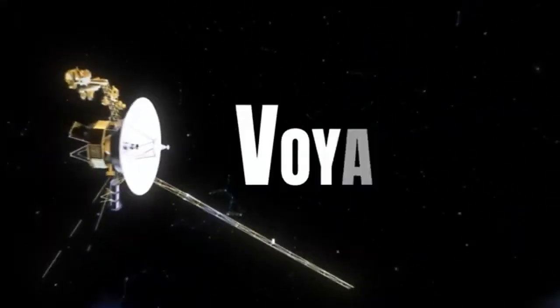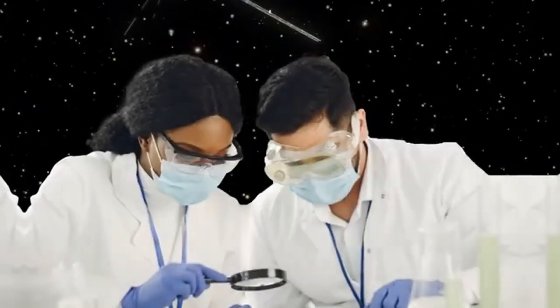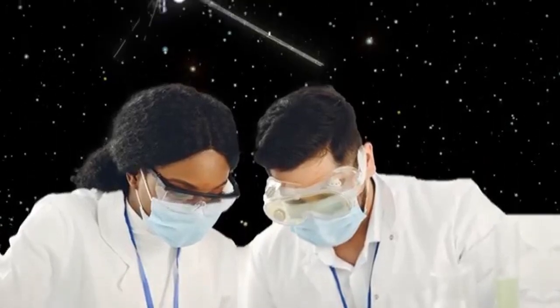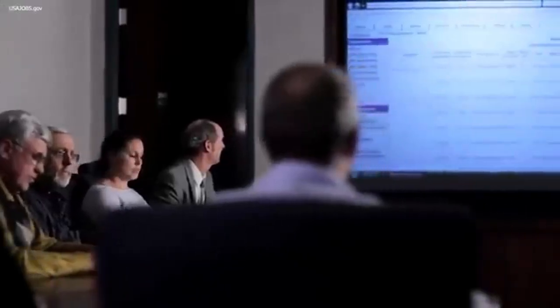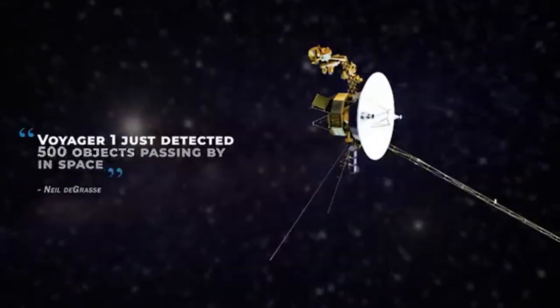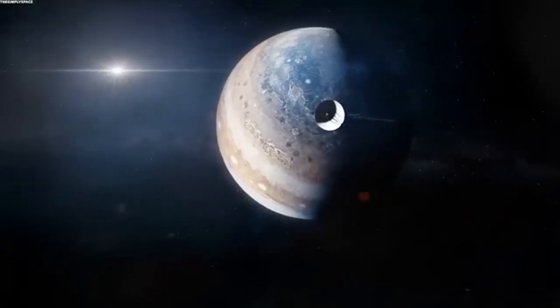To put this in perspective, Voyager 1 is over 14.5 billion miles away from Earth, traveling at about 3.6 times the distance between Earth and the Sun per year. This is impressive for a spacecraft that has been out there for so long. The mysterious objects Voyager 1 detected are fascinating, as it somehow spotted 500 unknown objects passing by in space, providing totally new information that no one expected.